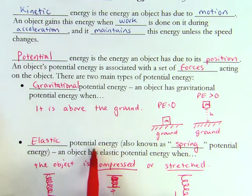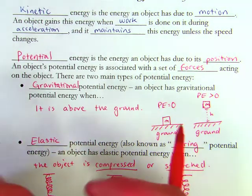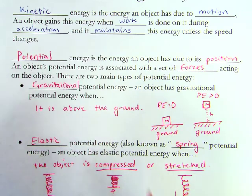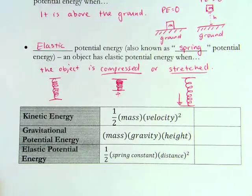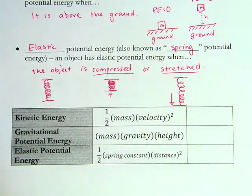So that is what elastic potential energy is, because if you stretch it or compress it, as soon as you let go, it's going to want to bounce back to exactly how it was. Now, before we finish here, let's look at the formulas for these three kinds of energy.